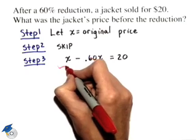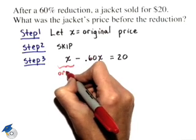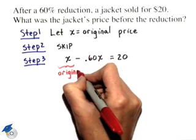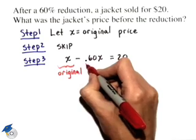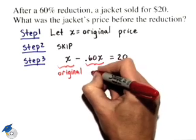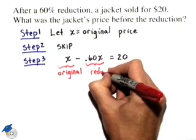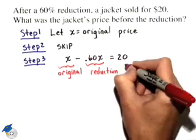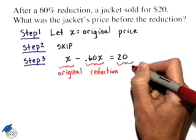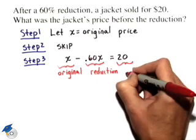In step 3, the x represents the original price, 0.60x represents the reduction, and $20 represents the price after reduction.